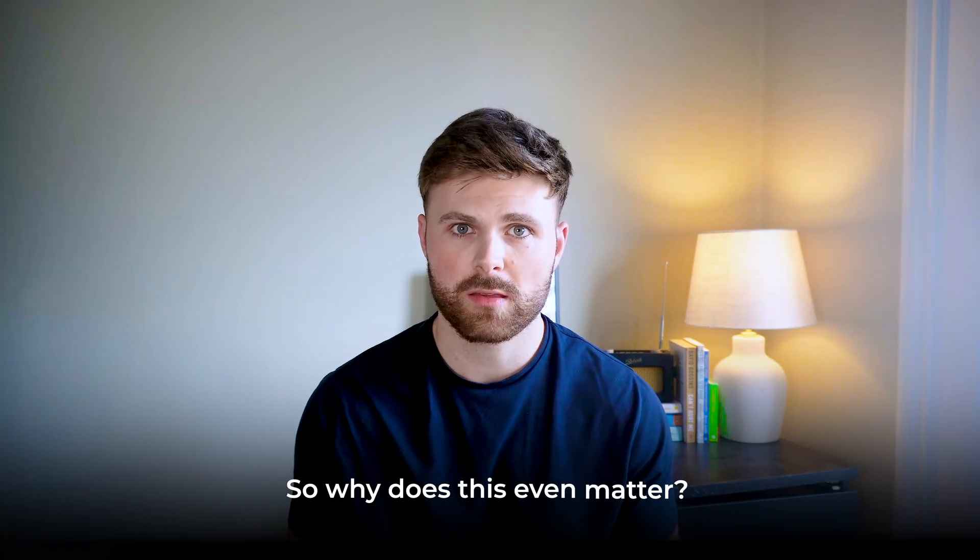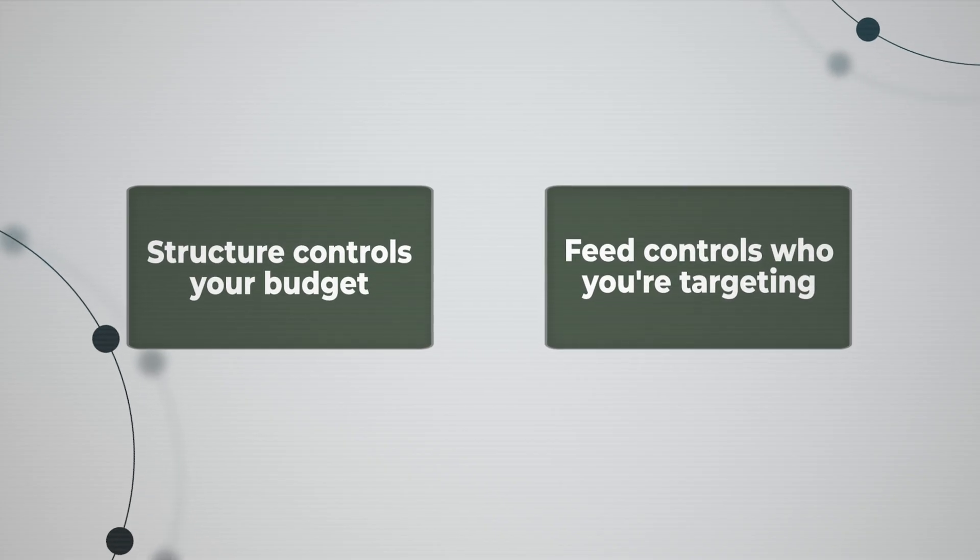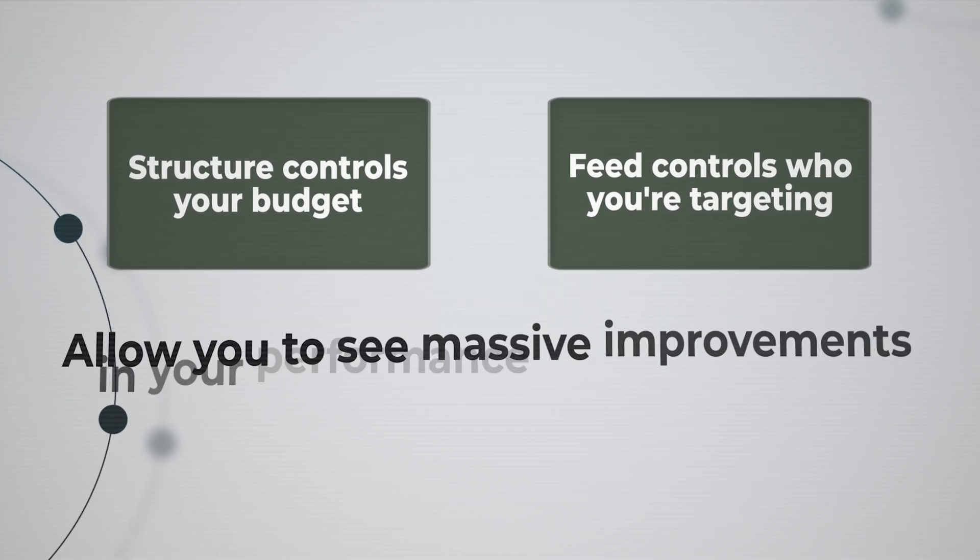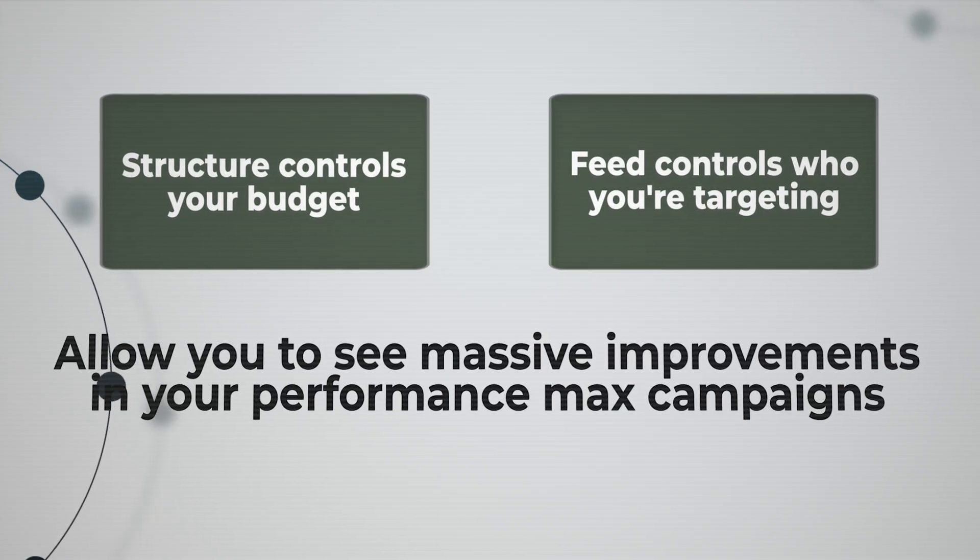Even if your campaign structure is perfect, if your feed quality is weak, Google will not know who to show your products to. But with an optimized feed, you're showing Google what you sell and who your customers are, giving it the best chance to put ads in front of high-quality customers. As an example, feed optimizations — primarily title optimizations — improved impressions by 130% for a brand we just started working with. To summarize: structure controls your budget, feed controls who you're targeting.